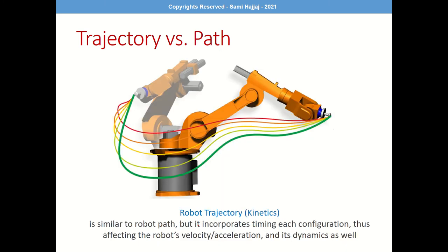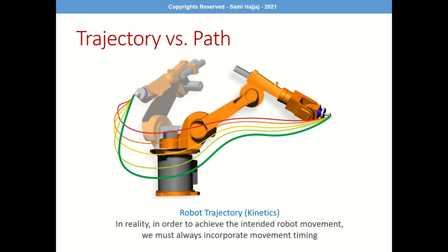Now let's talk about robot trajectory. A trajectory is very similar to a robot path — a sequence of changing configurations — however, we now incorporate the timing. We must incorporate timing, otherwise we'll have problems. The robot's velocity, acceleration, and dynamics are all incorporated. Essentially, a trajectory equals a path plus timing — the timing of how the configuration changes.